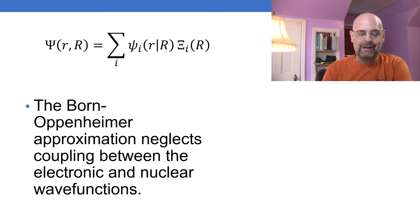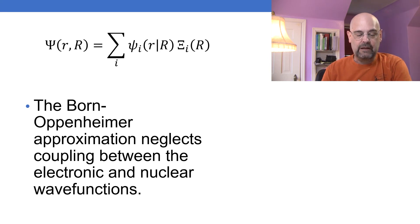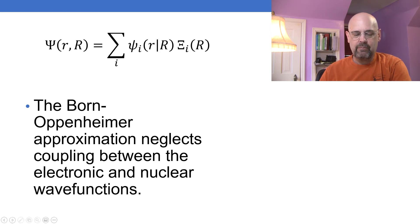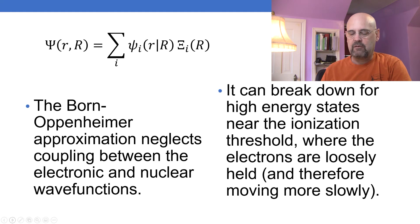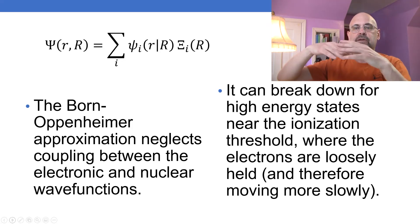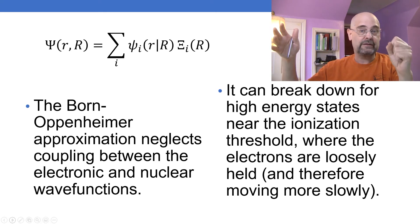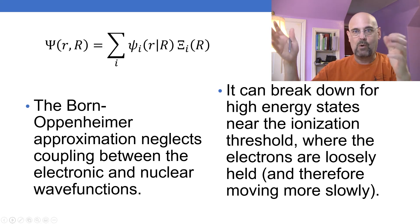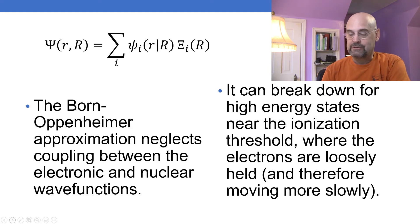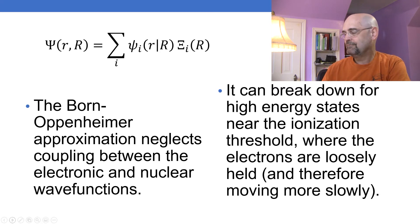The Born-Oppenheimer approximation neglects coupling between electronic and nuclear wave functions. Consider an electron placed into a very diffuse molecular orbital — these are called Rydberg states, because they might be so far out that the rest of the molecule looks like a single point, like a one-electron atom. Those electrons are so loosely held that they're moving very slowly, and because of that this approximation might break down. But that's a rare situation.